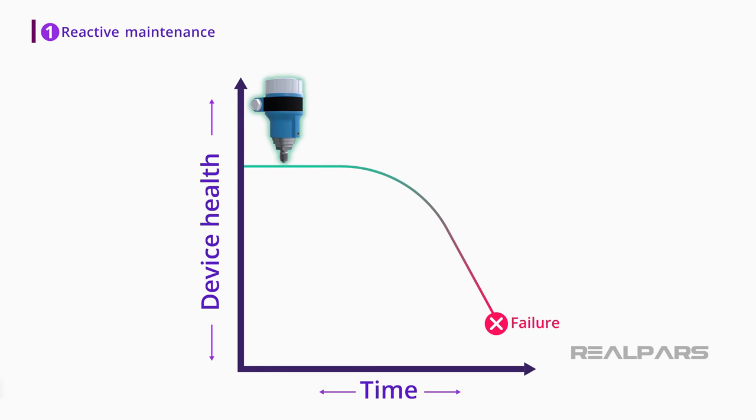With reactive maintenance, you simply wait until a device breaks down and then perform maintenance on that device. That means that you wait until the device fails and requires maintenance and then react, hence reactive maintenance. For example, let's say that you have a microwave oven at home. You use it for a few years until it gets to the point of failure and it won't turn on anymore.